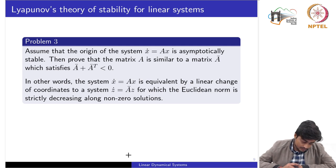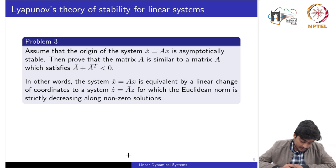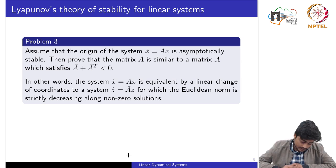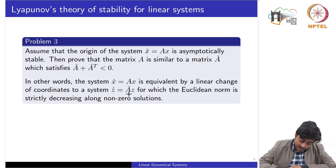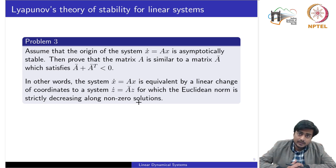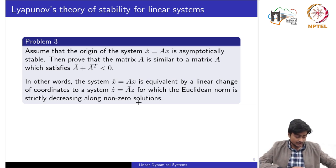Problem 3: assume the origin of the homogeneous system with state matrix A is asymptotically stable, meaning all eigenvalues lie on the left-hand side. We need to show that A is similar to a matrix Ā satisfying Ā + Ā^T < 0. Equivalently, the system is related by a linear change of coordinates to a system in z with state matrix Ā for which the Euclidean norm is strictly decreasing along non-zero solutions.